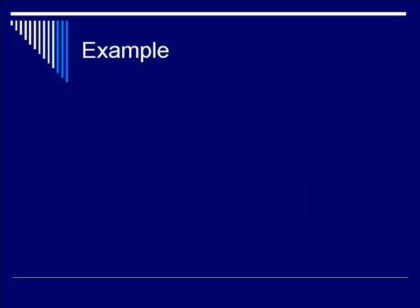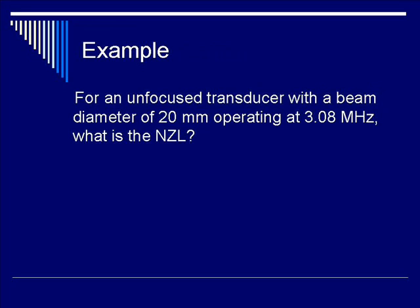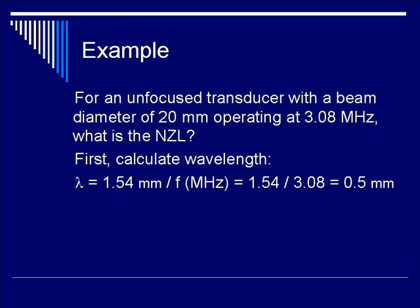Now let's look at an example to consolidate this equation. For an unfocused transducer with a beam diameter of 20 millimeters operating at 3.08 megahertz, what is the near zone length, or NZL? Let's find the frequency as it relates to wavelength. Wavelength equals 1.54 millimeters divided by F (frequency in megahertz), which equals 1.54 divided by 3.08, conveniently equaling 0.5 millimeter for the wavelength.